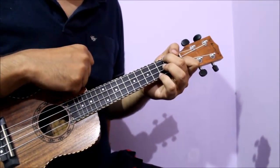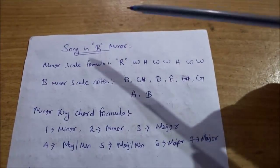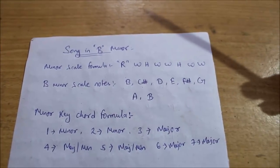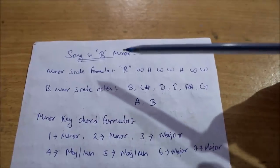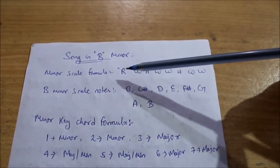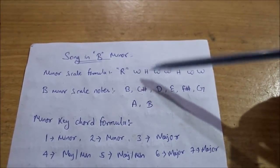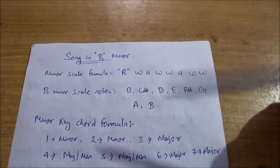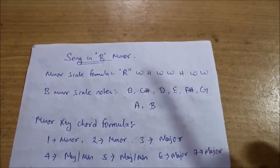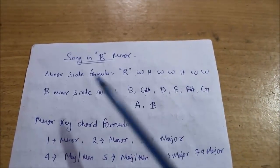Now let's go with minor key. We will use the same logic in minor key if you have a song in minor. The formula is a bit different for minor: Root, Whole, Half, Whole, Whole, Half, Whole, Whole. The concept of root and whole is the same - the intervals are similar to major key.